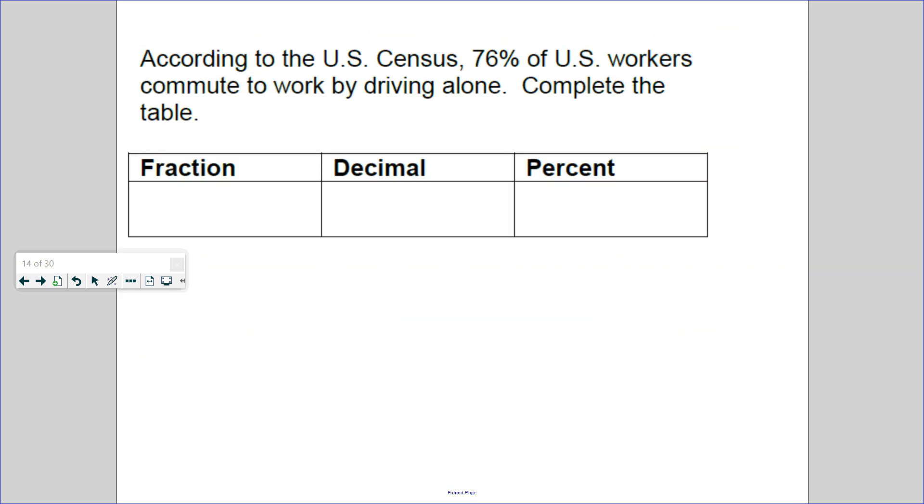And then last but not least, according to the U.S. Census, 76 percent of U.S. workers commute to work by driving alone. That is 76 percent. How would you write that as a decimal and a fraction? Well, percent means per or out of 100, so 76/100. And how would you write 76 hundredths as a decimal? 0.76.